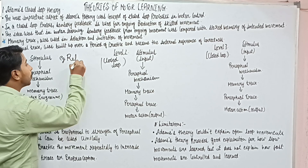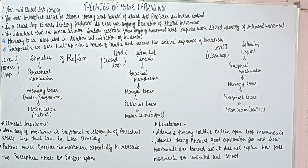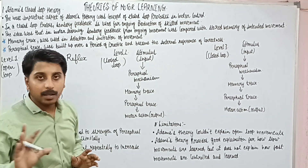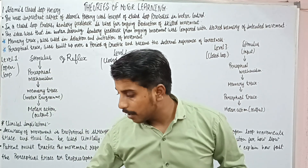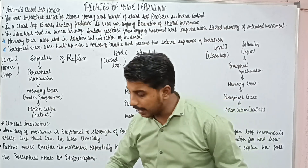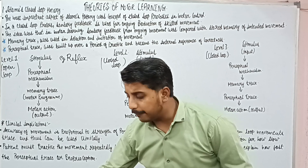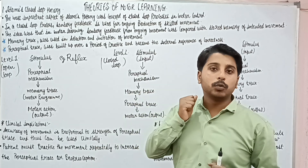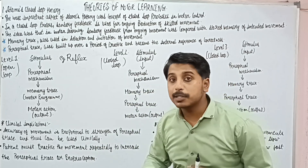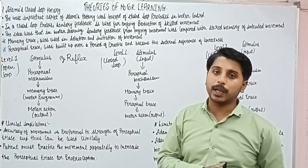Let's talk about reflexive movement. For example, there is a hot tawa and I accidentally touch it. What will I do? I will do the flexion of my arm — that is, this will be a flexor withdrawal reflex.